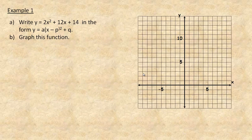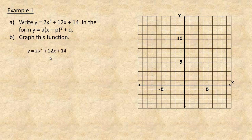In example 1, it says to take a standard form equation and write it in vertex form — this is more of an application on the following page. We'll also graph it. So let's take the function: y = 2x² + 12x + 14. In completing the square, the first thing you do is factor the a-value out of the terms that have x's.